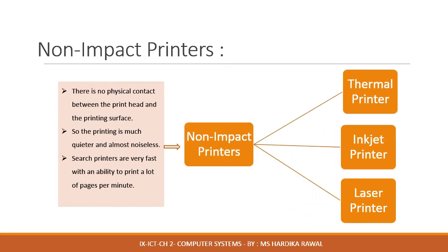All the previously seen printers were impact printer types. Now we are going to see the non-impact printers. In non-impact printers there is no physical contact between the printing head and the printing surface, so the printing is much quieter and almost noiseless. Such printers are very fast, with the ability to print a lot of pages per minute. Different technologies like laser, inkjet, thermal, chemical, and electrostatic exist, giving a wide range of printers. There are mainly three types: thermal, inkjet, and laser printers.